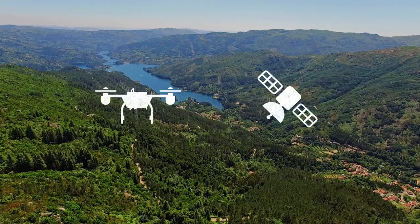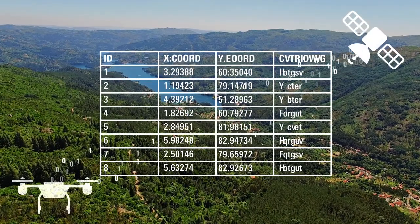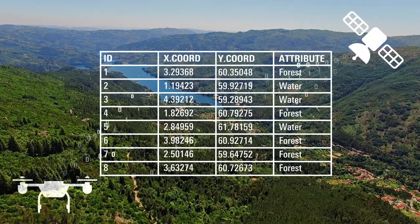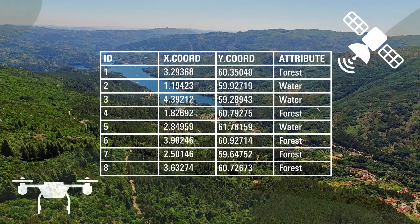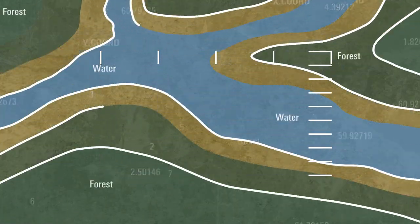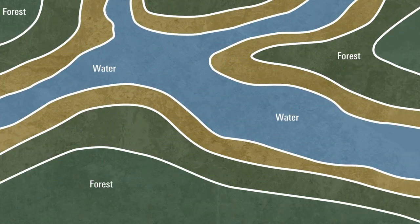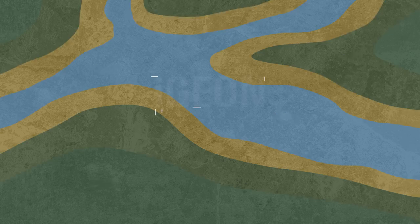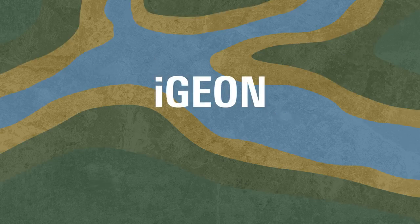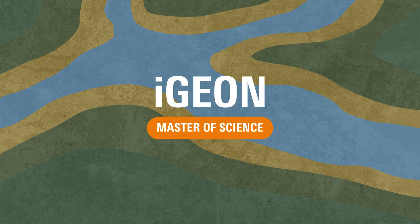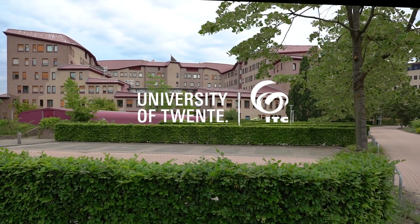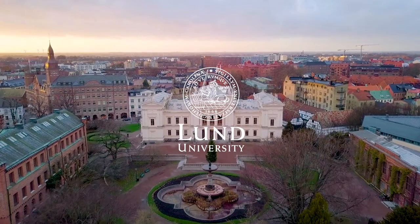The collected data is stored and structured in a database. This structured data can then be used to create maps that help solve societal issues. This is the basis of iGian, an online Master of Science program offered by two renowned universities: the University of Twente and Lund University.